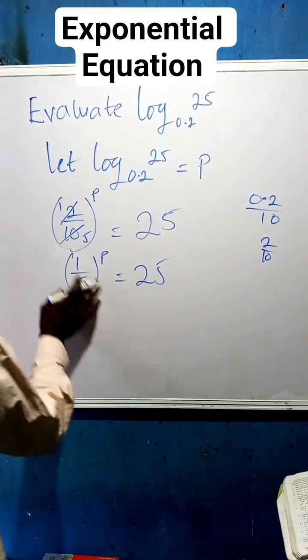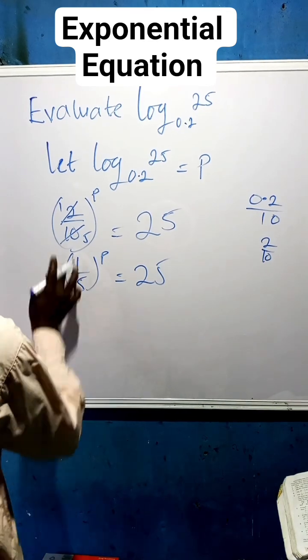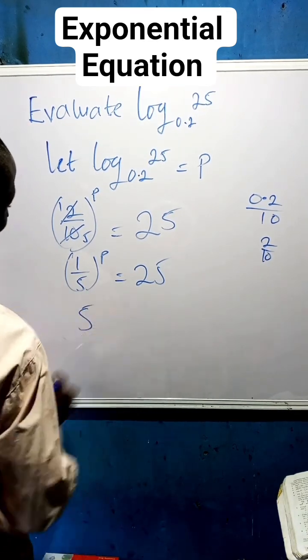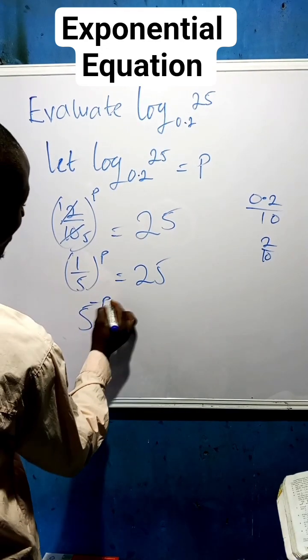When you have 1 over, it becomes minus. Don't forget, 1 over becomes minus. So now I have 5, this 1 over becomes minus, and this P is here.